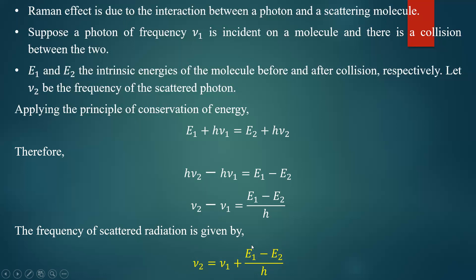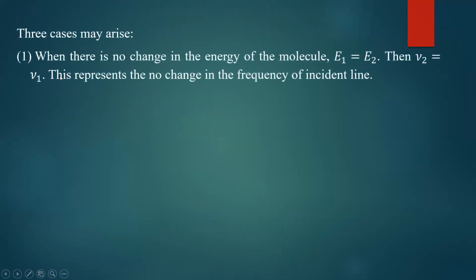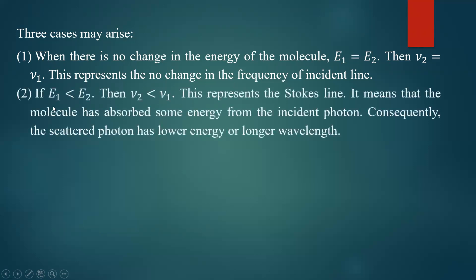Three cases may arise. First case: if there is no change in energy of the molecule, then e1 = e2. Then nu2 = nu1, meaning the frequency of the scattered photon equals the frequency of the incident photon. This represents no change in frequency — the scattered frequency is equal to the incident frequency. This gives rise to the incident line only.